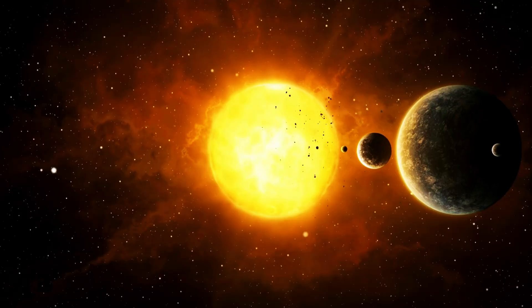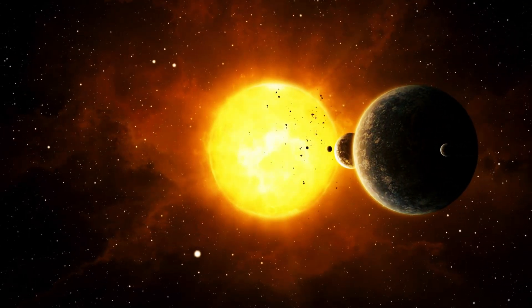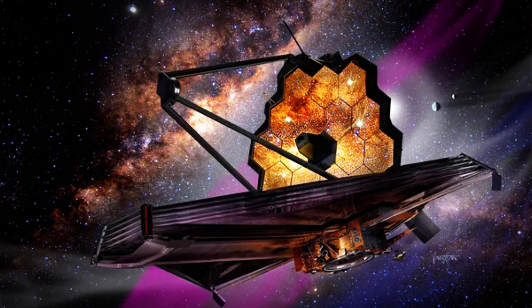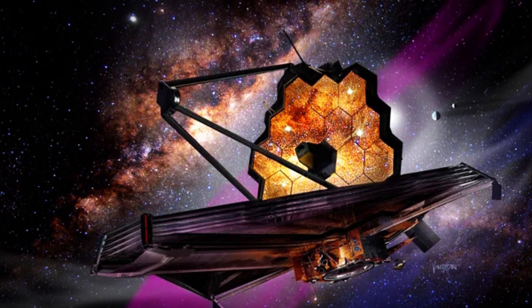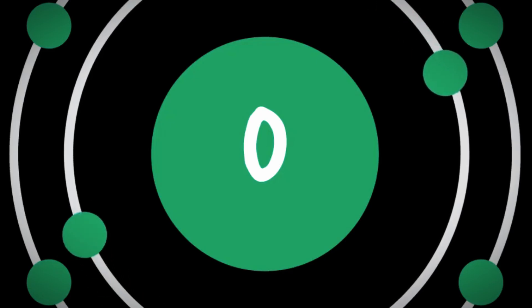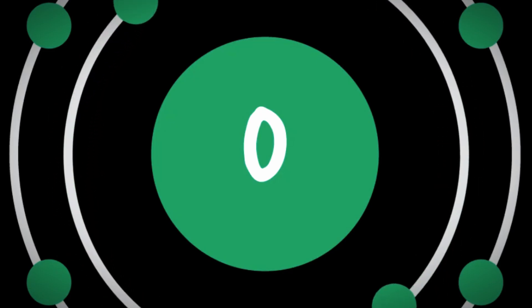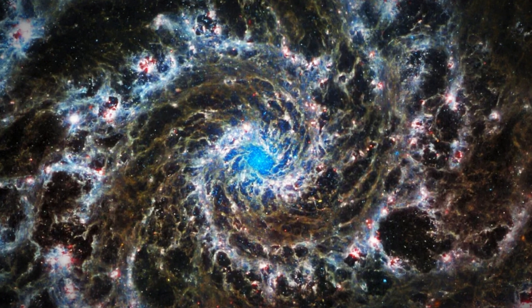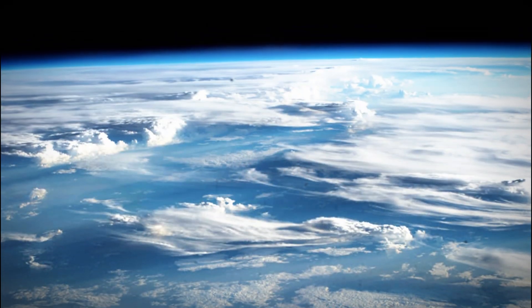However, scientists must carefully analyze light as it passes through the planet's atmosphere to confirm this. While the James Webb Space Telescope, JWST, excels at examining planetary atmospheres, it struggles to detect bound oxygen, a crucial sign of life. Despite these challenges, the JWST can still identify other potential life markers, like ozone, in the atmosphere.